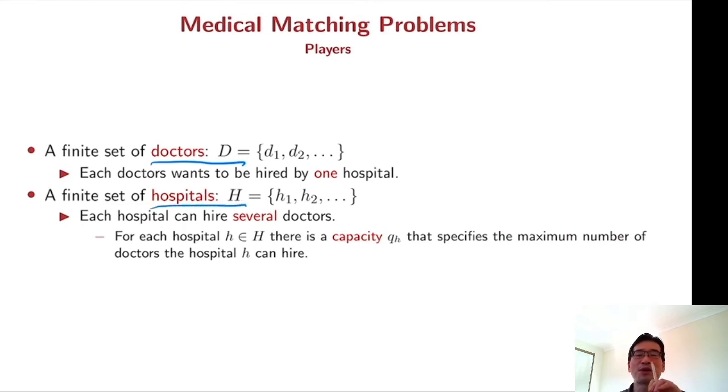Each doctor wants to be hired by one hospital. But each hospital can hire several doctors. So we have some capacity constraint here. Each hospital H has a capacity QH that specifies a maximum number of doctors the hospital H can hire.